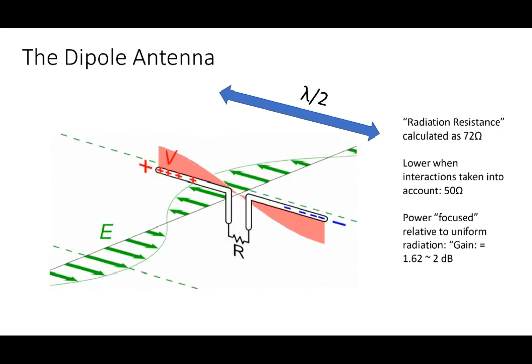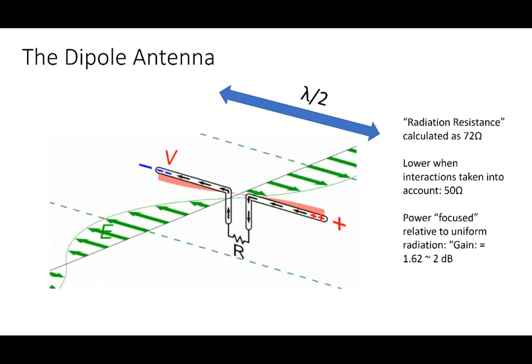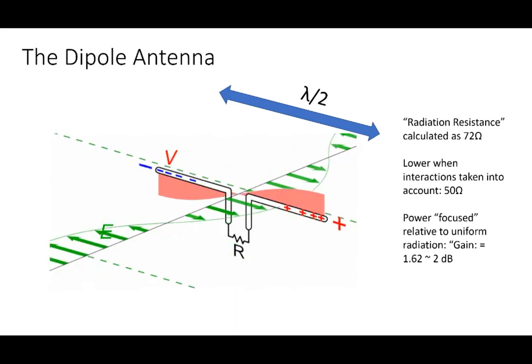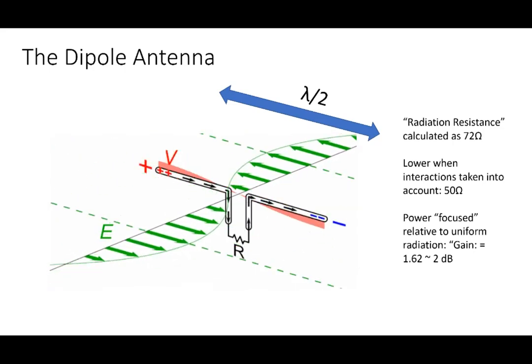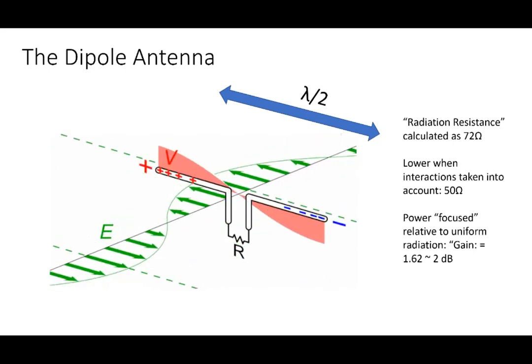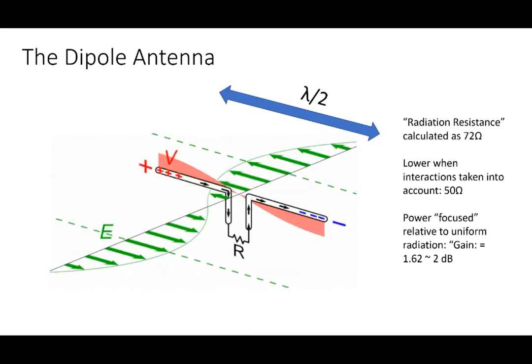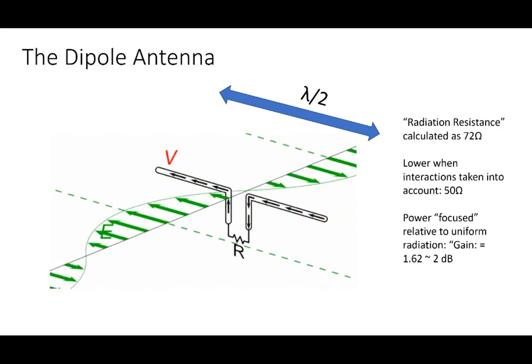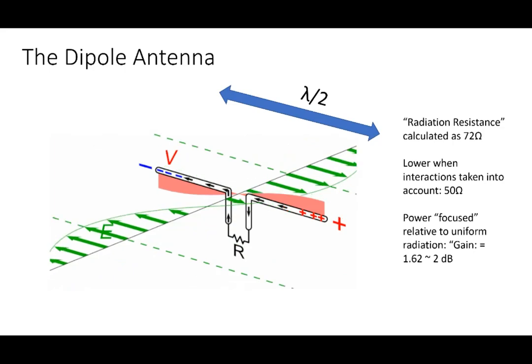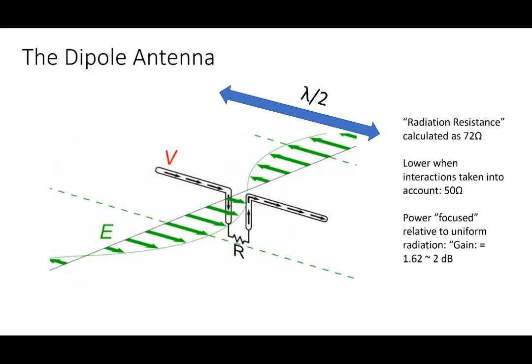So let's turn to the simplest efficient antenna, which is the dipole antenna. This consists of two conducting rods, each of a quarter of a wavelength in length. For example, if we're on the 10-meter band, then half a wavelength is five meters and a quarter wavelength is two and a half meters. So these two rods you see here would be two and a half meters each.